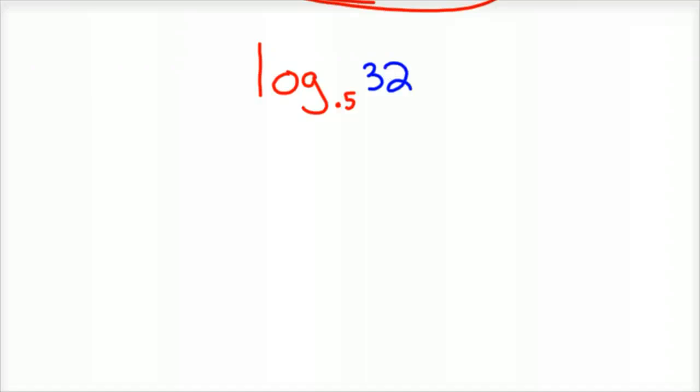This one's correct. Log base 0.5 of 32. Now you can hit stop and try it out. Here we go. Set it equal to X. 0.5 to the X power equals 32.